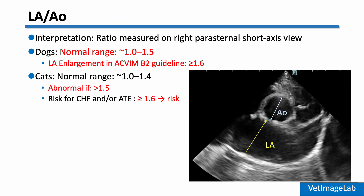The LA to AO ratio is one of the most important indicators of left atrial enlargement. In dogs, it's measured from the right parasternal short axis view at the level of the aortic root in early diastole. The normal LA:AO ratio in dogs is about 1.0 to 1.5; a value of 1.6 or greater is considered enlarged. In cats, the normal range is around 1.0 to 1.4, and a value greater than 1.5 is generally considered abnormal. Studies suggest that an LA:AO over 1.6 is a strong predictor of congestive heart failure risk.